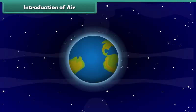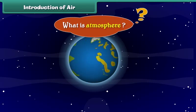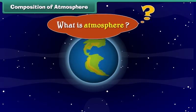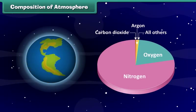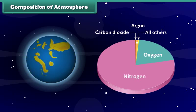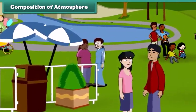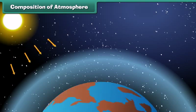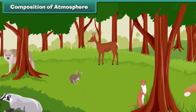Do you know the atmosphere surrounding earth is full of air? But what is this atmosphere? The atmosphere is made up of a mixture of gases, primarily nitrogen and oxygen, that wrap around the earth like a blanket. Without the atmosphere we would not be able to live here. It protects us from the dangerous rays coming from the sun and makes earth a perfect habitat for plants and animals.